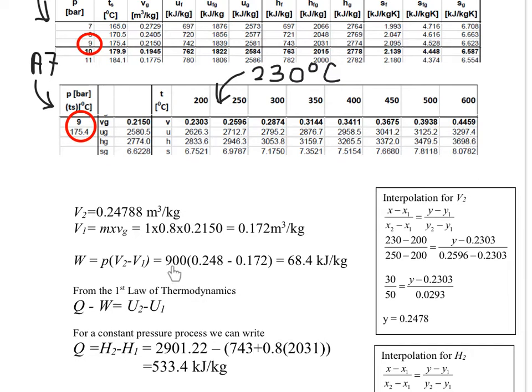With the 9 bar we now change it to 900 kilonewtons, and multiply by the change in volume. We get the work done which is 68.4 kilojoules per kilogram.